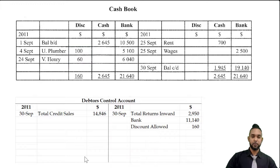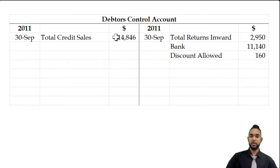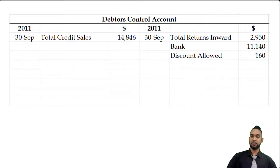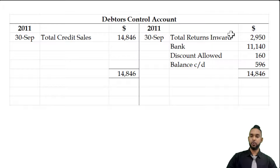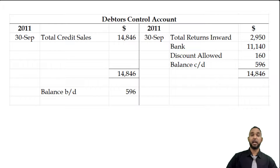To balance the account, find the total on the debit side, find the total on the credit side, and subtract — giving a balance carried down of $596. Both columns total the same amount, and the balance is carried down on the credit side then brought down on the debit side, since assets usually have debit balances.